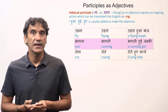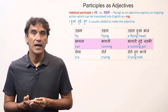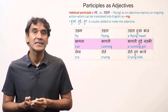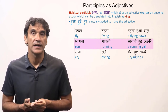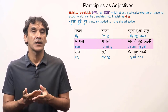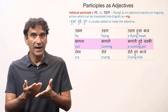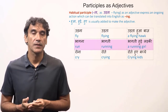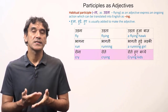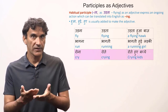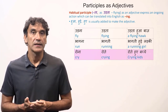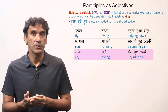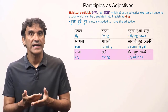Similarly, 'bhagna' means 'to run', 'bhaagti' is the present participle in feminine singular form, and 'bhaagti hui ladki' means 'a running girl'. 'Rona' means 'to cry', 'rote' is the masculine plural form, and 'rote hue bache' means 'crying kids'.